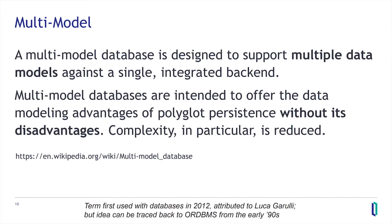Multi-model is simply the idea that you can take one data store, or one data store stack — sometimes different instances — and use it with different models on the same data. For example, take something which is a document store and present it as SQL for reporting, or have something that does both graph relationships and table relationships along with the same data.